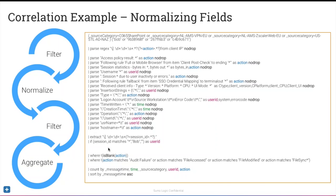For the VPN logs that didn't have a user ID in every entry, we used extract on the session ID. We then said: if the session ID matches any of our known IDs, call it 'bob' — effectively adding a user ID to all VPN logs so they could be correlated across the board. After normalization we did another round of filtering: dump everything that's blank in the action field since our parsing wasn't perfect, using is_blank — which handles null, empty, or whitespace.